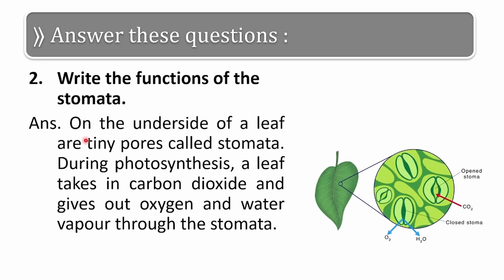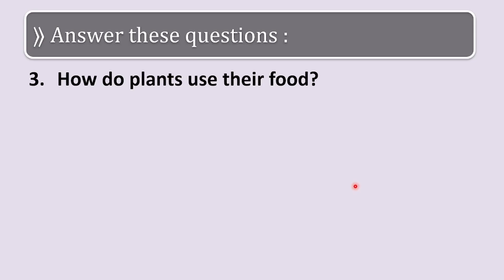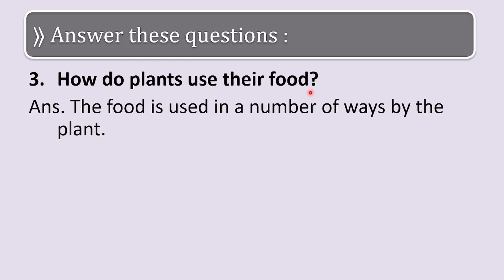Long answer Q2: write the functions of stomata. On the underside of a leaf are tiny pores called stomata. During photosynthesis, a leaf takes in carbon dioxide and gives out oxygen and water vapor through stomata. Here I have shown a picture of stomata — when viewed under a microscope you can see these tiny pores in the leaf.